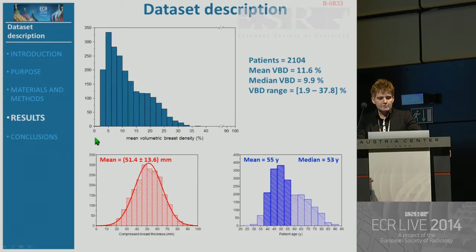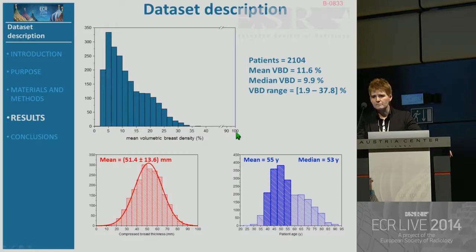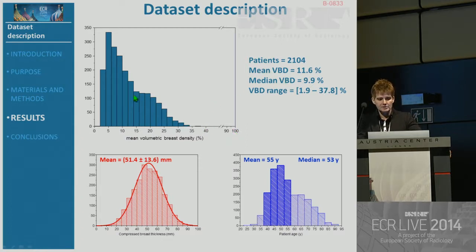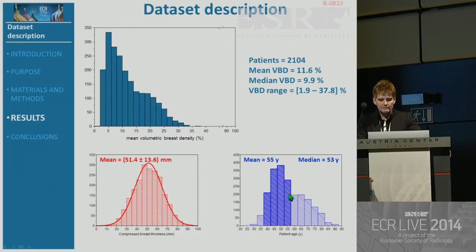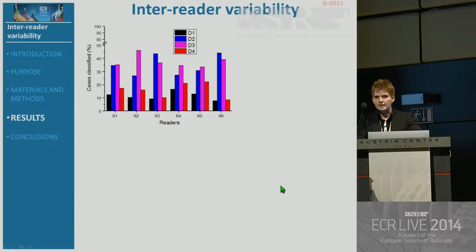The data are distributed in terms of volumetric breast density as the mean across the four views. As you can notice, it's well below 100 percent — which is the full scale for breast density — and also below 50 percent. The median, which is more representative of the distribution, is around 10 percent. The compressed breast thickness is around 50 millimeters, and the age distribution shows a rather large number of young women, so you can expect probably denser breasts than in a screening population.